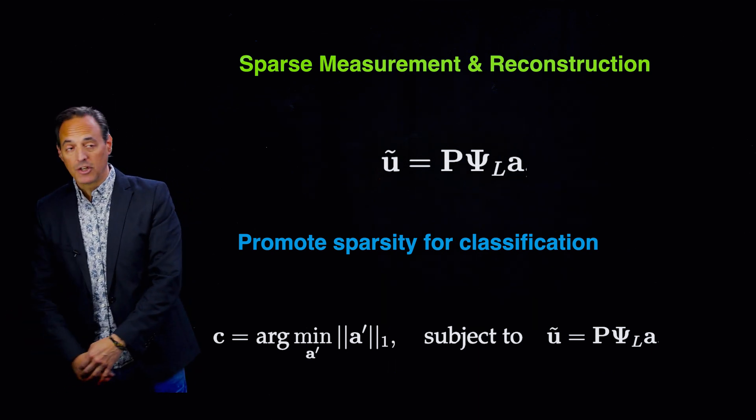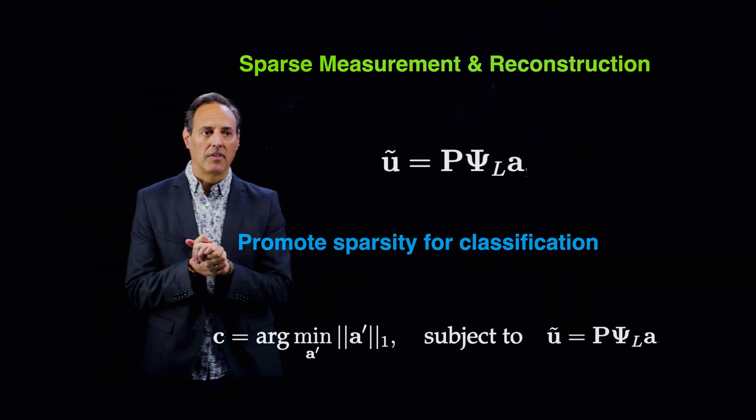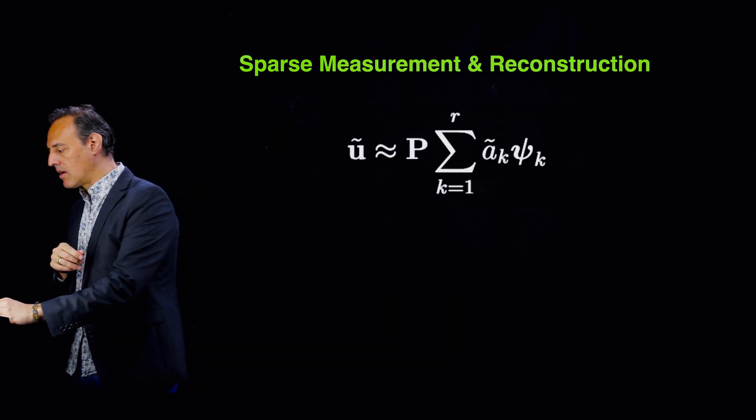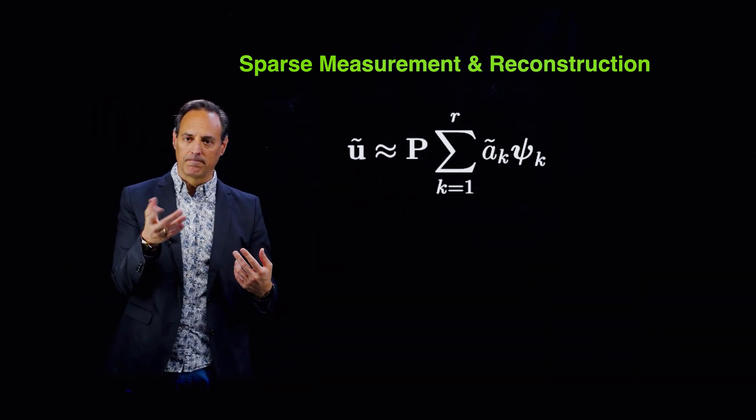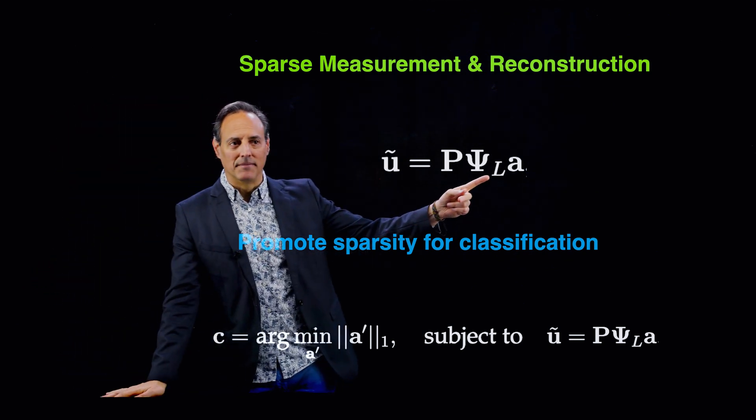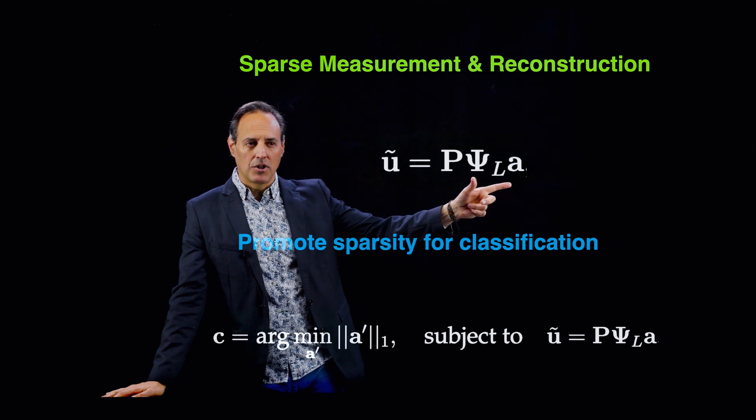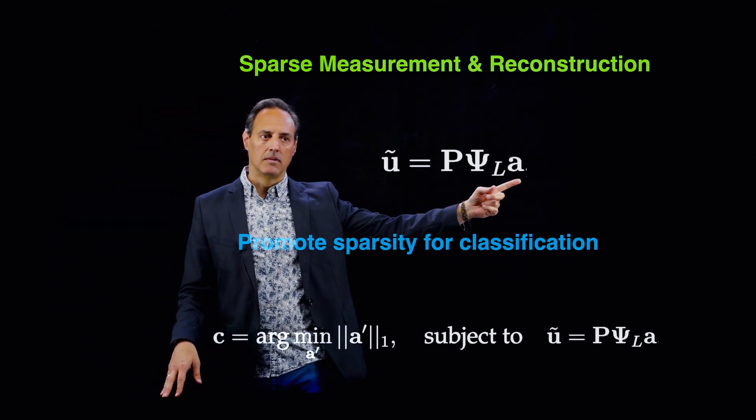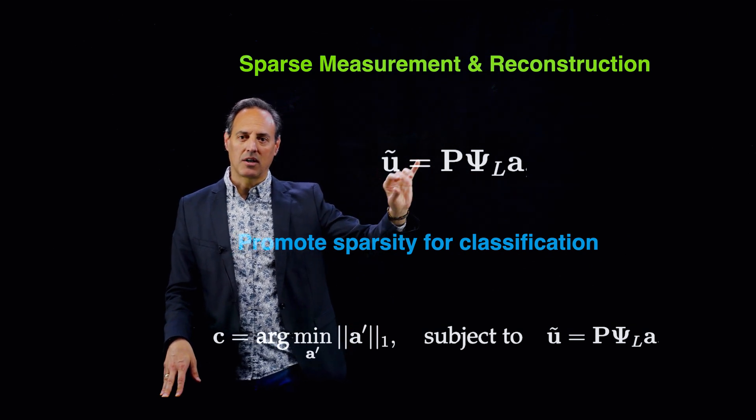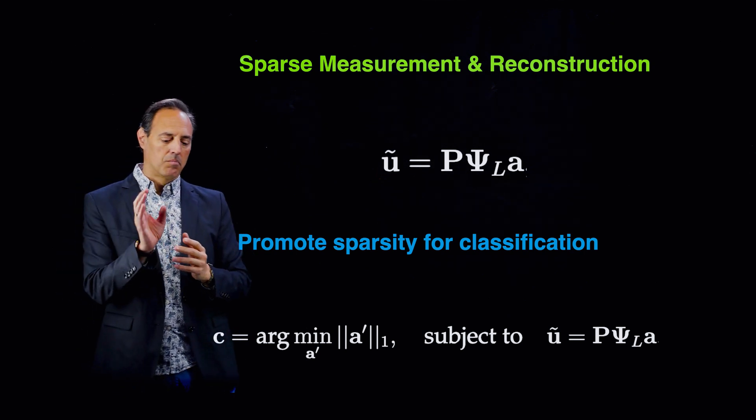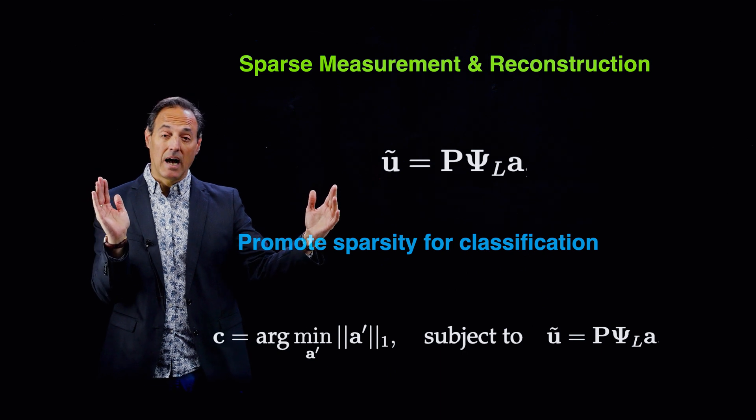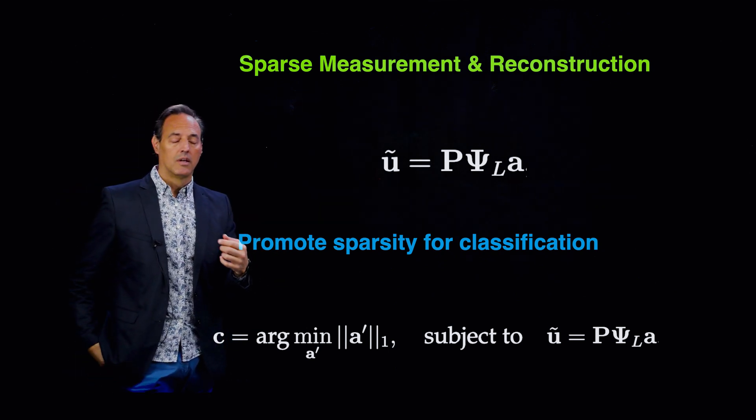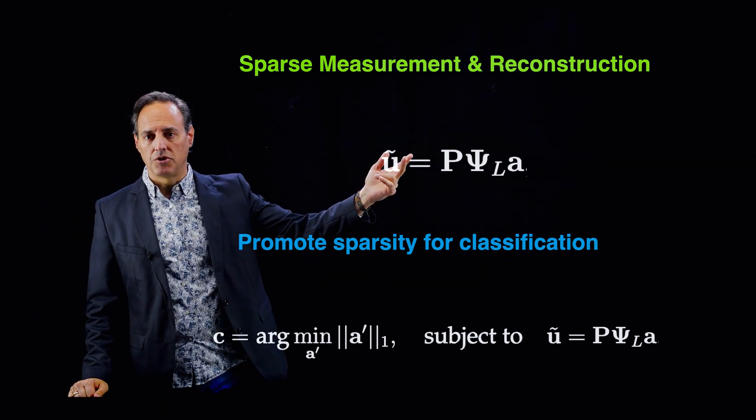We're going to start changing this idea of the interpolation points we're using for DEIM or Q-DEIM or GEIM or gappy methods in general. We're not going to just say you're only being used for interpolation. We're also going to say that these measurement points or interpolation points are also going to be used for doing a classification task to tell me which library elements should I be using in the first place. Because I have a library of a bunch of different possibilities. Which ones do I go after? Accurate reconstructions is what we want. And here's what we want to do now. This is going to be how we think about our reconstruction measurements. Notice how we're going to change this approximation. Before, when we did this approximation, we only had one set of modes.